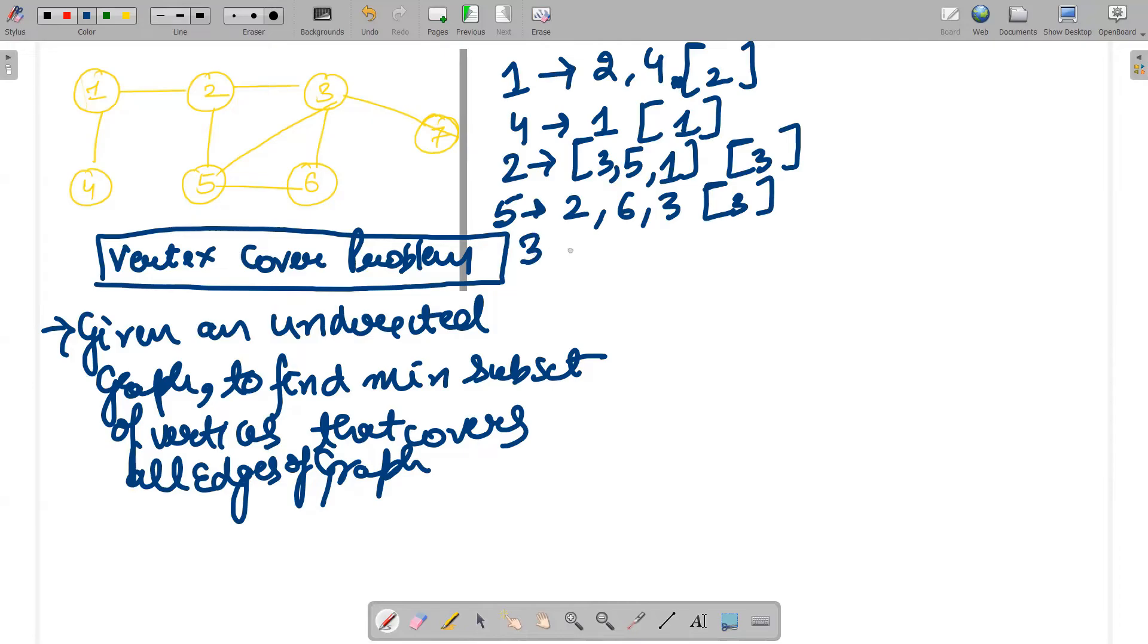Let's talk about 3. 3 is connected to, so 5 is connected to 2, 3, 6. That's it. So 3 is connected to 2, 7, 5 and 6. It is having 4 connections, right? Similarly,